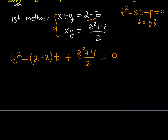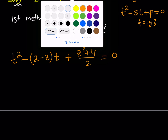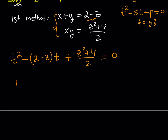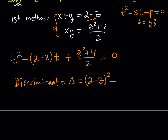I have an equation in t and I'm going to try to solve it using the discriminant — something interesting will happen. The discriminant delta equals b squared minus 4ac, which is (2 minus z) squared minus 4·(1)·(z squared plus 4)/2. The 4 and 2 cross-cancel, leaving a factor of 2. Expanding (2 minus z) squared gives 4 minus 4z plus z squared.